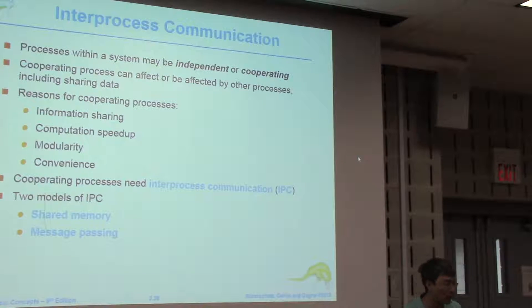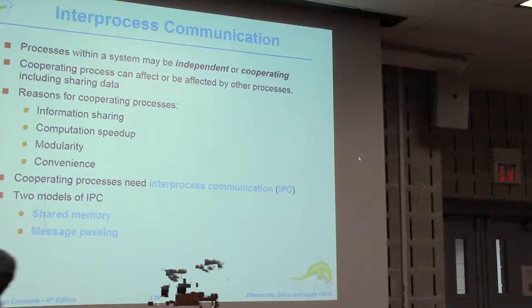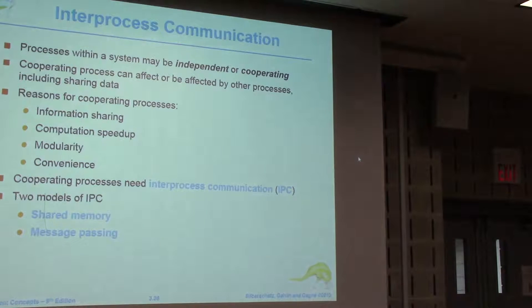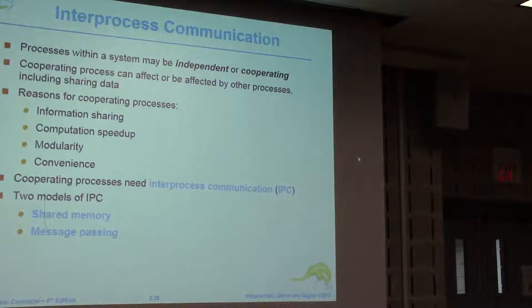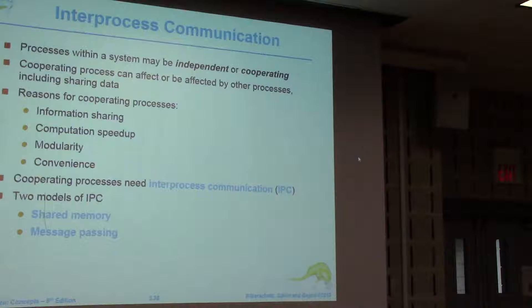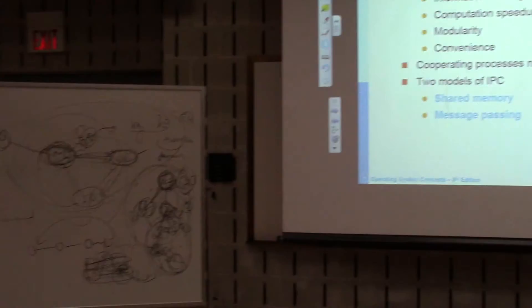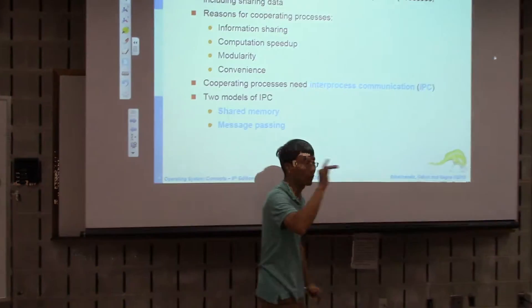There are two models for inter-process communication. Imagine a notice board — you put something there and other students can see it. That is the shared memory approach. Another one is like a PO box for each student — you can send mail to a specific box. That is called message passing. You can send a message to a specific process.